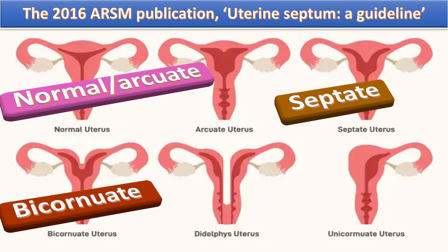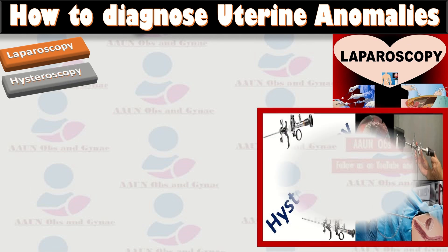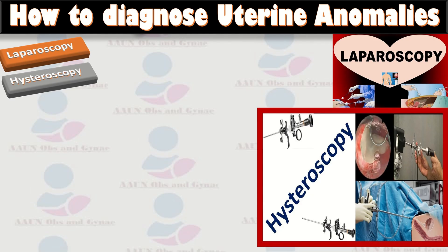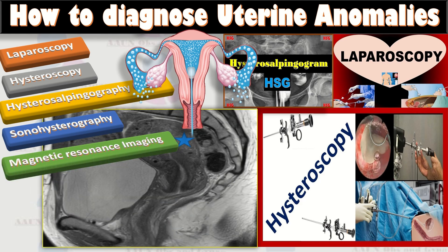Certain investigations are done to diagnose uterine anomalies. Previously, the gold standard has been a combination of laparoscopy and hysteroscopy, but imaging techniques such as ultrasonography, hysterosalpingography, sonohysterography, and magnetic resonance imaging are less invasive alternatives to screen, diagnose, and classify congenital uterine anomalies. While conventional two-dimensional transvaginal ultrasound and sonohysterography are good for screening, 3D transvaginal ultrasound and MRI can accurately classify congenital uterine anomalies.